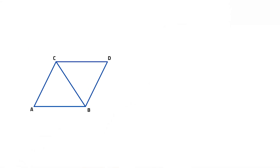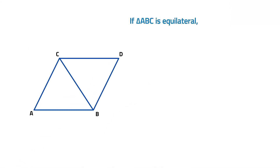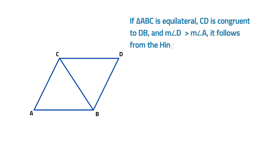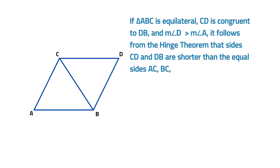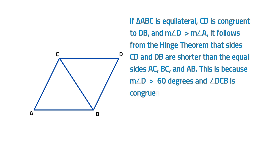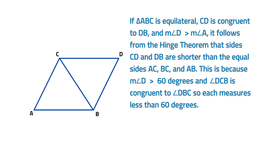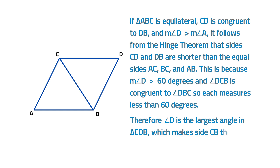Which is the largest angle and the largest side in this figure? If triangle ABC is equilateral, side CD is congruent to side DB, and the measurement of angle D is greater than the measurement of angle A, it follows from the hinge theorem that sides CD and DB are shorter than the equal sides AC, BC, and AB. This is because the measurement of angle D is greater than 60 degrees and angle DCB is congruent to angle DBC, so each measures less than 60 degrees. Therefore, angle D is the largest angle in triangle CDB, which makes side CB the largest side in that triangle.